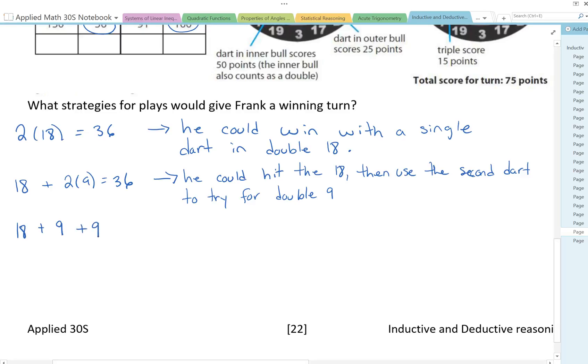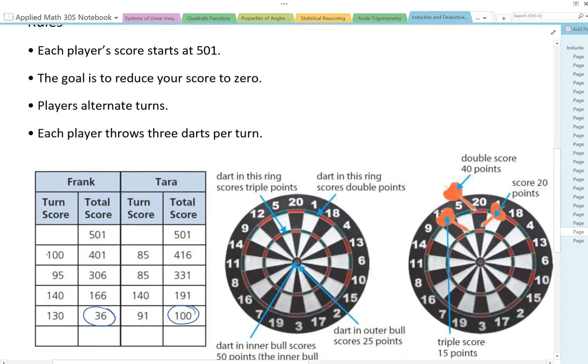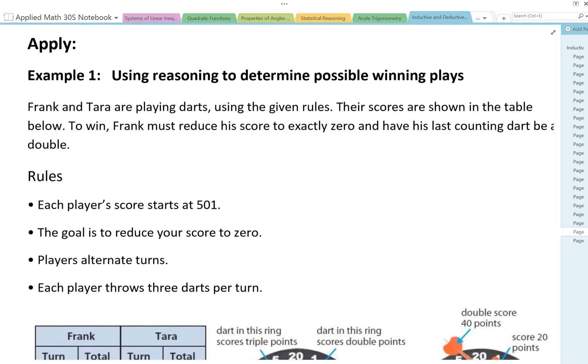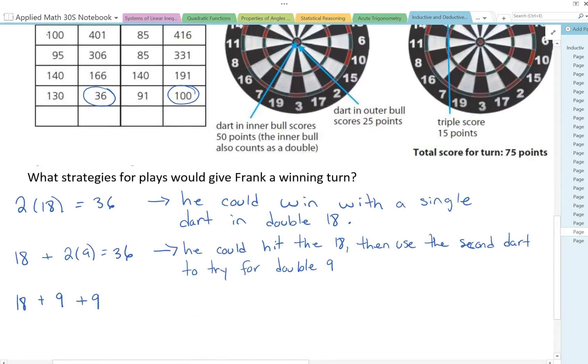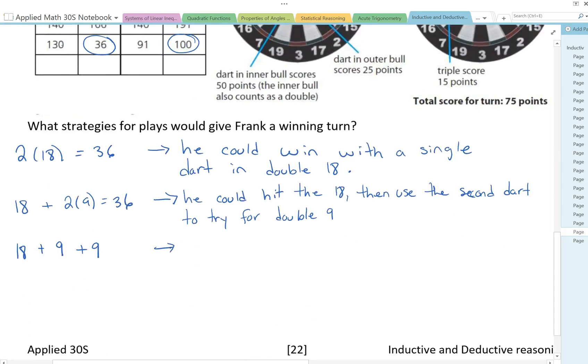And if he did that then his last remaining turn would not be a double. The original question asked to win Frank must reduce his score to exactly 0 and have his last counting dart be a double, so in this case he could not win with a double.